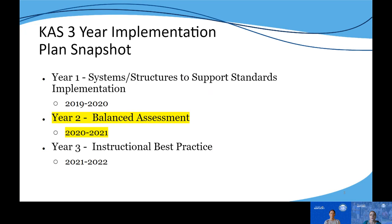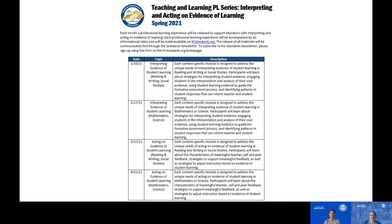We are currently in our second year of the three-year implementation plan that is focused on balanced assessment, really addressing that question of how do we know if students have learned. Our fall 2020 professional learning series took a closer look at formative assessment and eliciting evidence of student learning as a part of our spring 2021 PL series. This first module is focused on interpreting evidence of student learning, with specific versions available for reading, writing, and social studies in January, and math and science in February — four versions of module five in all, each available on kystandards.org.